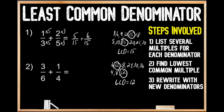Now let's move on to step number three, which is to rewrite the fractions with the new denominators. Our new common denominator is twelve. We need to keep these fractions equivalent, so we multiply the numerator by the same value. Six times two equals twelve, so we multiply our numerator by two as well — three times two gives us six. For the second fraction, four times three equals twelve, so one times three gives us three. Hopefully by now you understand how to find the least common denominator when working with fractions.